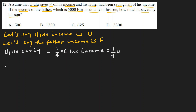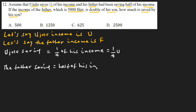Next, from the information that his father had been saving half of his income: the father's saving is equal to half of his income. Half means one-over-two, so the father's saving equals one-over-two times F.